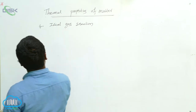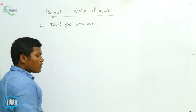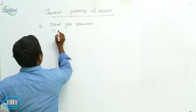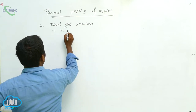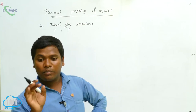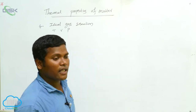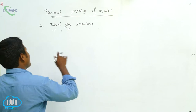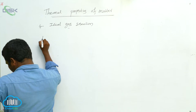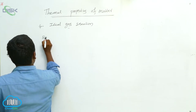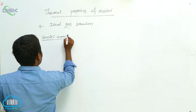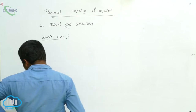Now I am going to define Boyle's law. In both Boyle's law and Charles's law, only three parameters exist: temperature, volume, and pressure. In Boyle's law, you have to keep the temperature constant, and the remaining parameters will change.